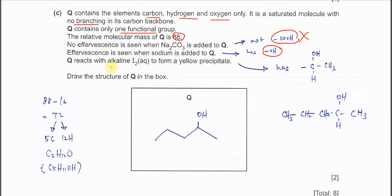Q reacts with alkaline iodine to form yellow precipitate. This is the iodoform test. When it forms yellow precipitate, it's telling you it has this group - CH3CH(OH). So now this alcohol must have this group.